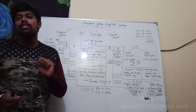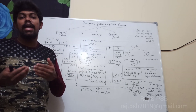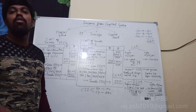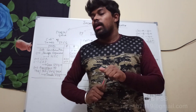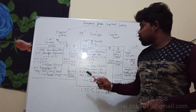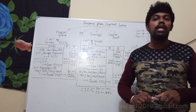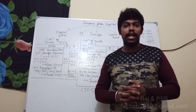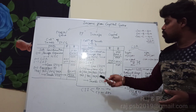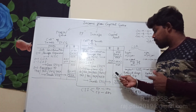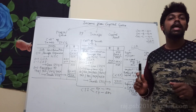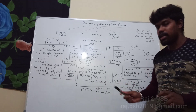From the gross long-term capital gains, certain exemptions are deducted because the Income Tax authority has provided them. These exemptions are under sections 54, 54B, 54D, 54EC, 54EE, 54F, 54G, and 54GA. Each exemption has its own criteria and conditions, after which we calculate the taxable long-term capital gains.